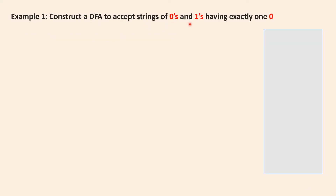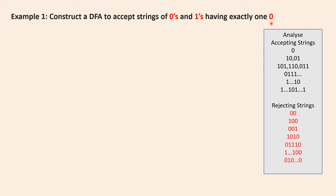Let us construct a DFA to accept strings of zeros and ones having exactly one zero. The accepting strings are those with only one zero — for example, just zero, or one-zero, zero-one-zero-one, one-zero-one, one-one-zero — but the entire string should have only one zero in it. It can have n number of ones, but the string should have only one zero. The zero can be at the beginning, in between, or at the end, but there must be only one zero in the entire string.